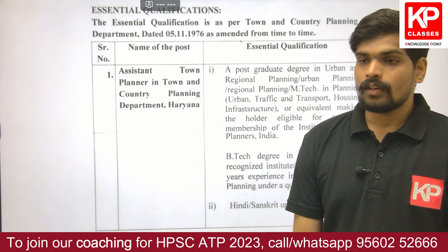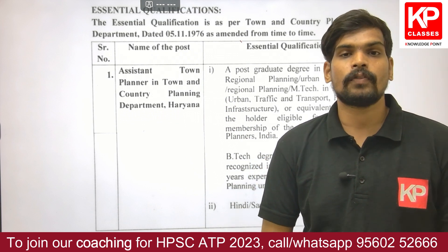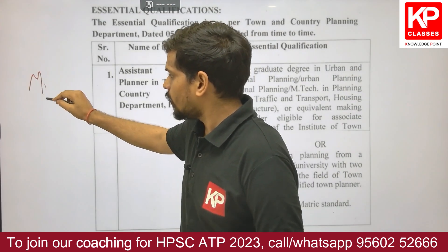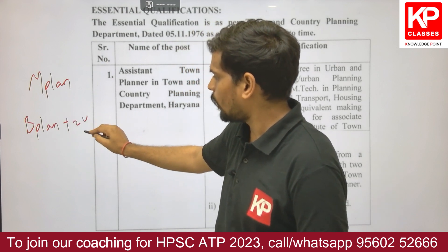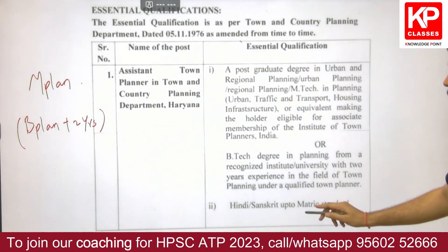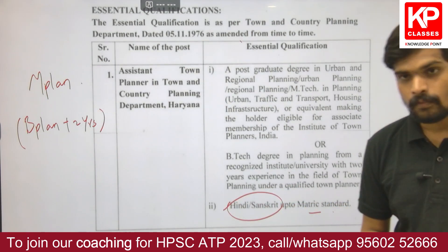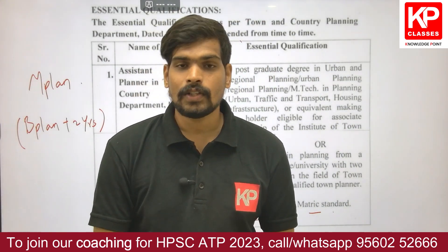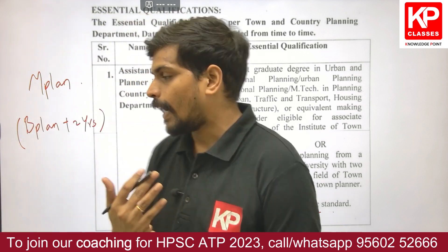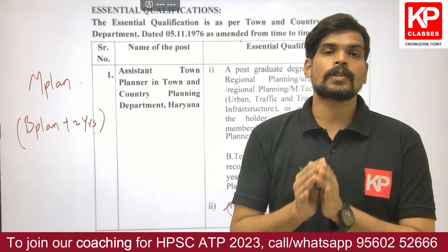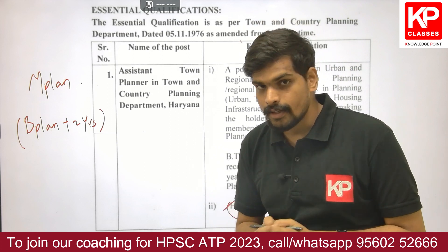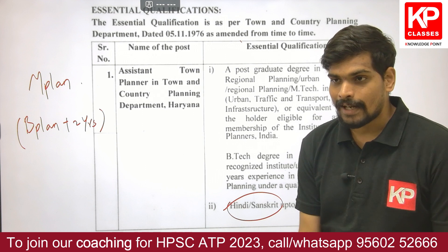Regarding qualification requirements — as per the original advertisement, the same criteria will continue for this extension period also. You should have a post-graduation degree in planning, OR a bachelor's degree in planning with two years of work experience. Work experience is not required if you have a master's degree; if it is a bachelor's degree then you need two years of work experience. Additionally, you should have Hindi or Sanskrit in your matriculation certificate. The age band is 21 years to 42 years — that is the minimum and maximum age criteria.